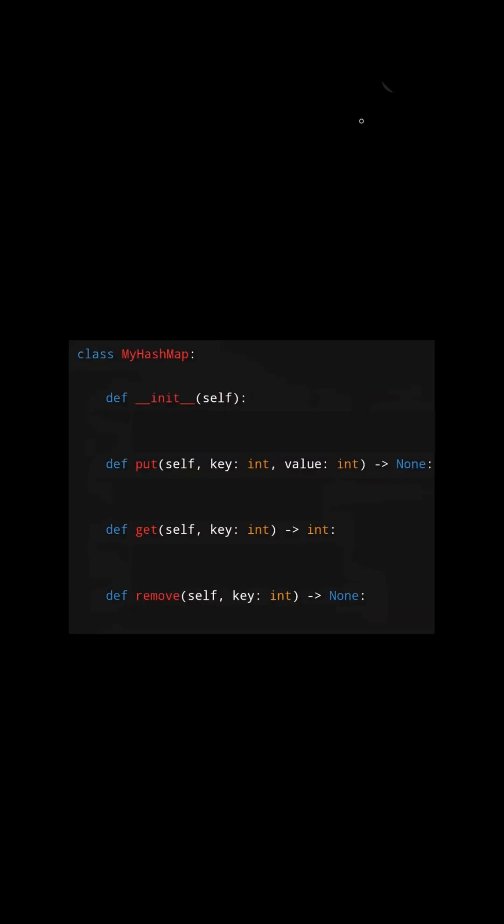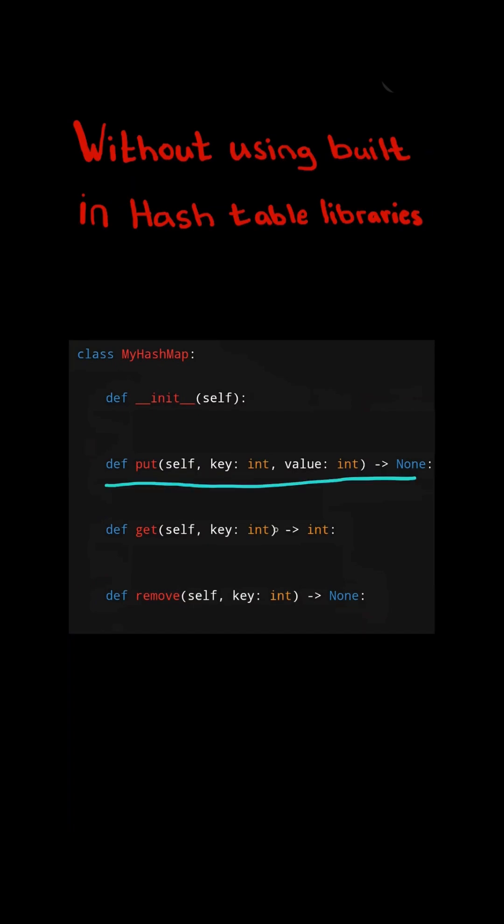Design HashMap: Given a class MyHashMap, implement the following methods for a HashMap without using any built-in hash table libraries. We must be able to put a key-value pair into our map, get the value to which the specified key is mapped to. If the map contains no mapping for the specified key, then we return negative 1.